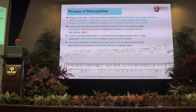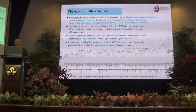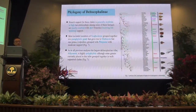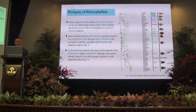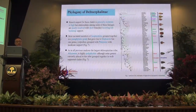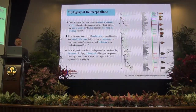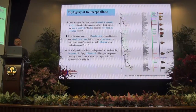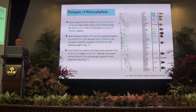Limotettix tribe, Pucculina tribe, and Deltocephalini are represented by multiple genera and always recovered as monophyletic from bootstrap analysis. Branch support for this clade is generally moderate to high, but relationships among some of these groups are poorly resolved, with short branches receiving low bootstrap support, mostly including members of Scaphytopiini grouped together in a paraphyletic grade that gave rise to Parabolocratini. Laupala grouped with Parabolocratini, with moderate support.